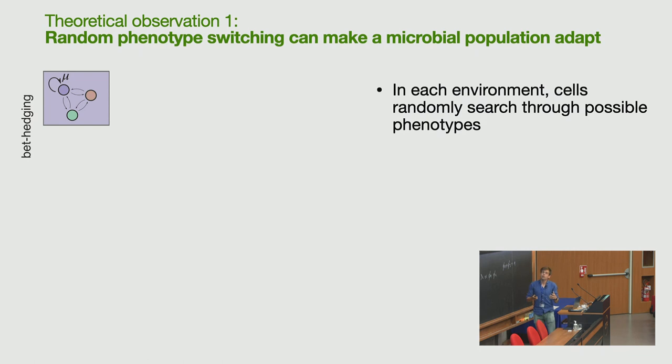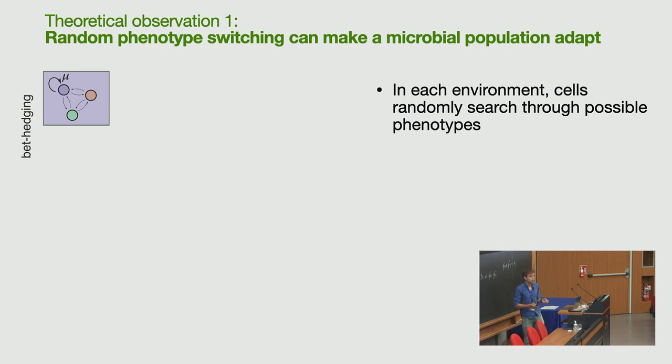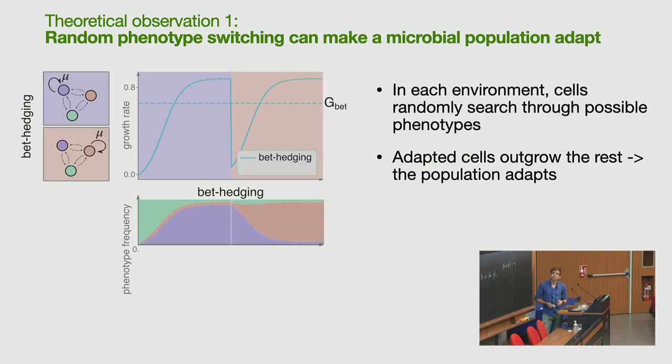Because if you start in an environment, each cell will randomly search through the space of phenotypes. And so starting in the purple environment with all cells in the green phenotype, they will just randomly switch sometimes and they might happen to be in the purple phenotype, which will then start growing and will outgrow the rest. So we just have some phenotypic selection here. If you go to the red phenotype, you see that the red environment, the red phenotype takes over.